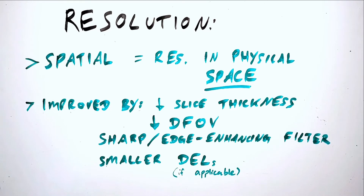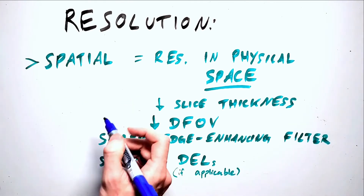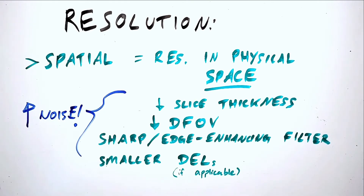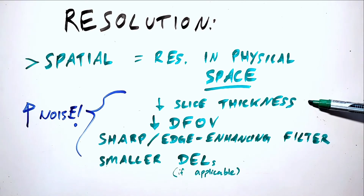It may seem intuitive to always do all of these things, such as always using the thinnest slices possible, but there is a trade-off to be made here. Many of these methods of increasing spatial resolution are limited in how far they can go, because they also increase our level of noise. Decreasing slice thickness, for example, decreases the volume of data used to generate each slice, meaning that a greater proportion of that thin slice of data will be made up of noise.